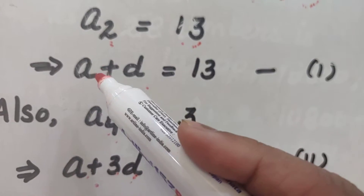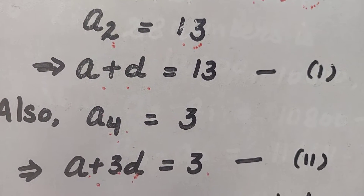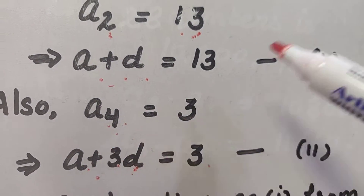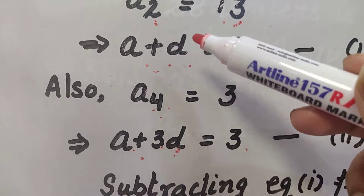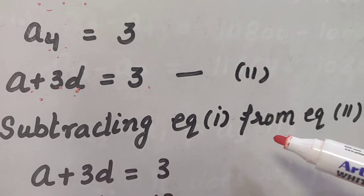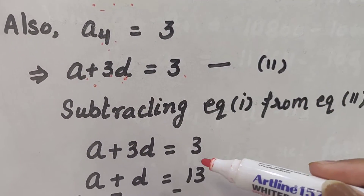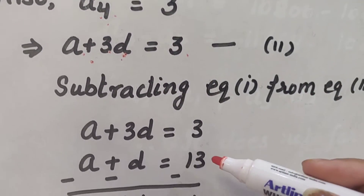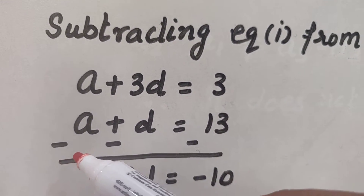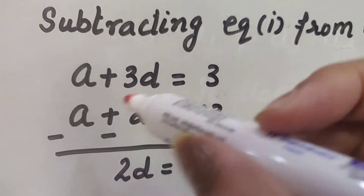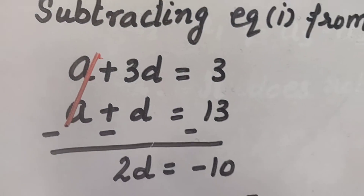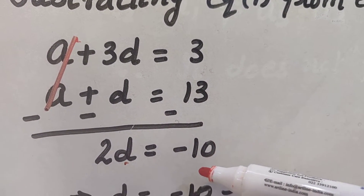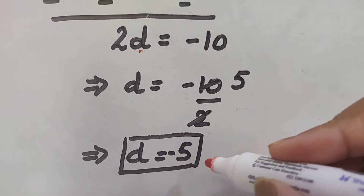You have done the chapter on a pair of linear equations in two variables — here the two variables are 'a' and 'd'. I have used the elimination method, subtracting equation 1 from equation 2. So: (a + 3d) − (a + d) = 3 − 13. The 'a' terms cancel, giving 2d = −10, so d = −5.